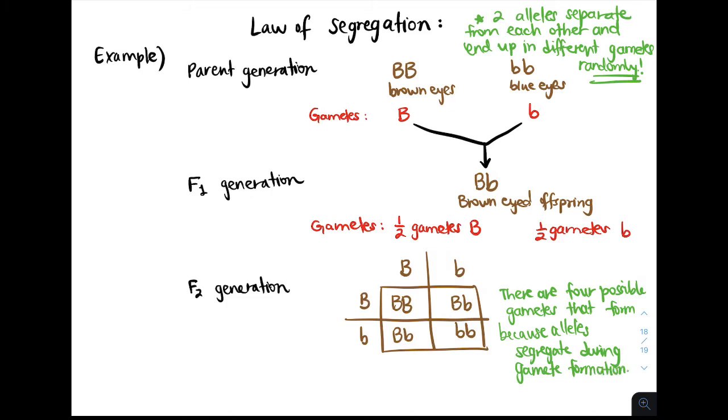So ultimately, each gamete has an equal likelihood of getting a big B allele or a little b allele. And this is all because alleles separate independently or randomly during gamete formation.